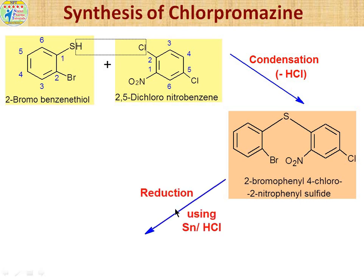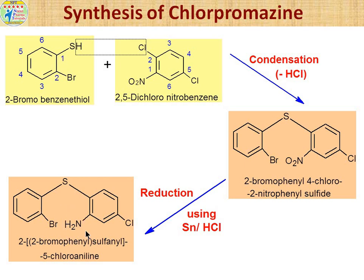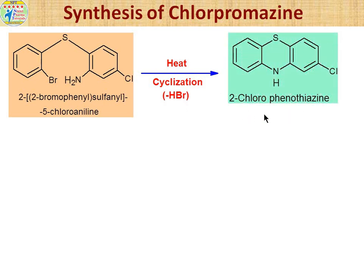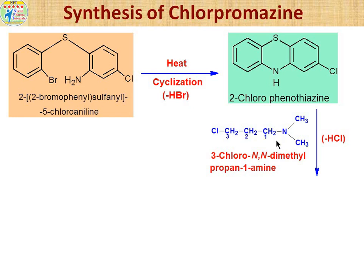The first intermediate enters the second step: reduction using tin and hydrochloric acid as reducing agents. The nitro group present in the intermediate is converted to an amino group, generating the second intermediate. This second intermediate then enters the third step, which involves cyclization by heating. The amino group's hydrogen and the bromo group are released as HBr, and the product 2-chlorophenothiazine is obtained — the tricyclic ring system, but missing the side moiety at the 10th position.